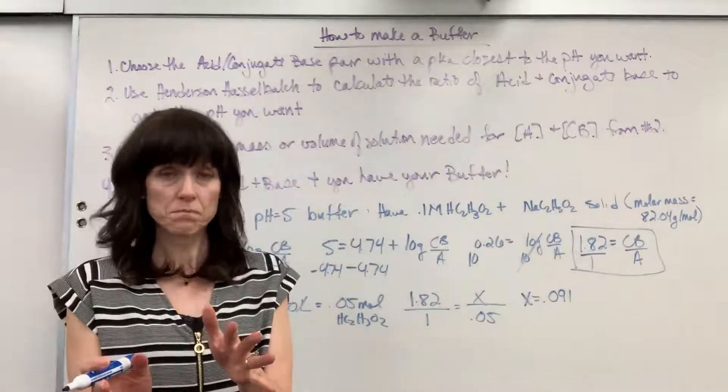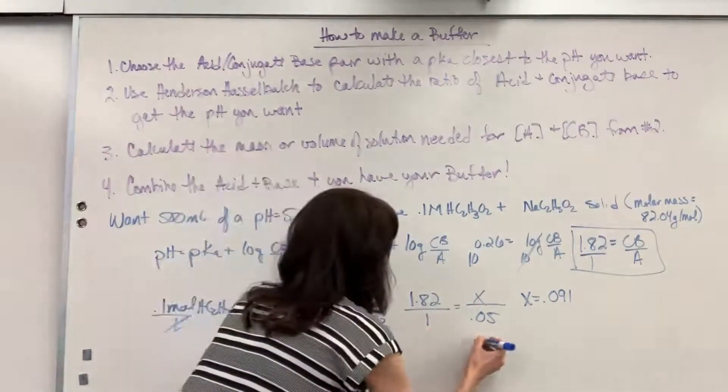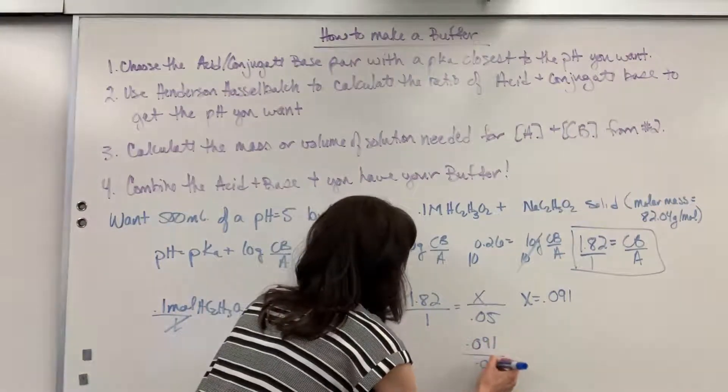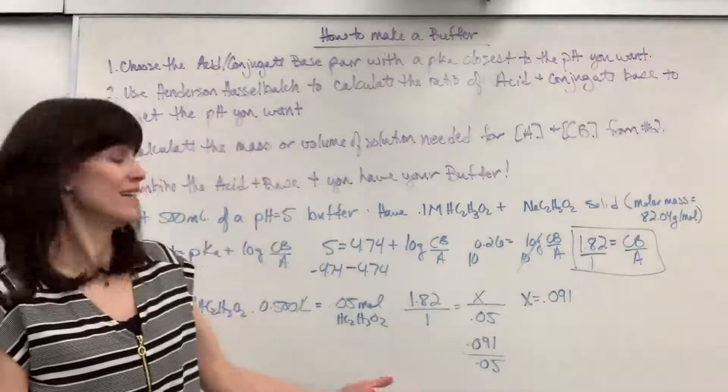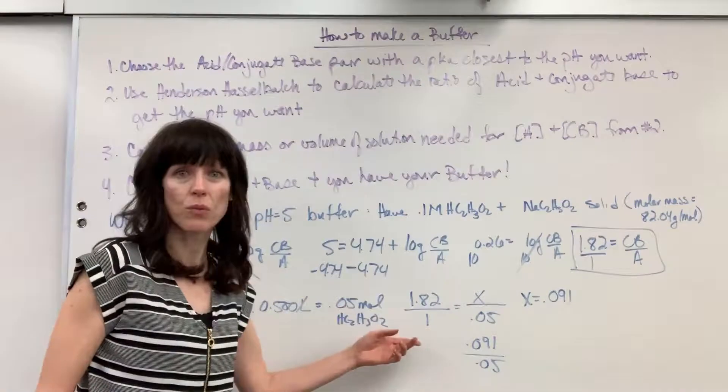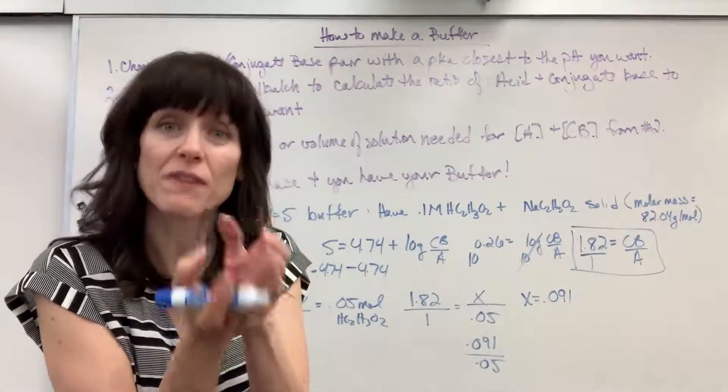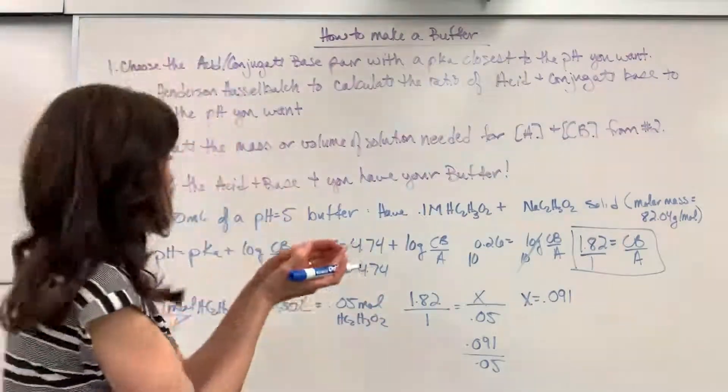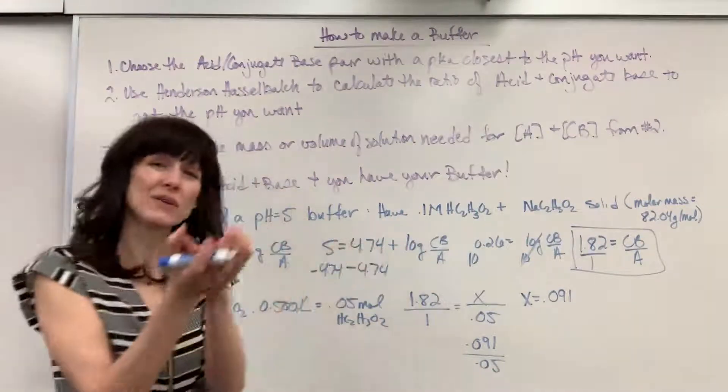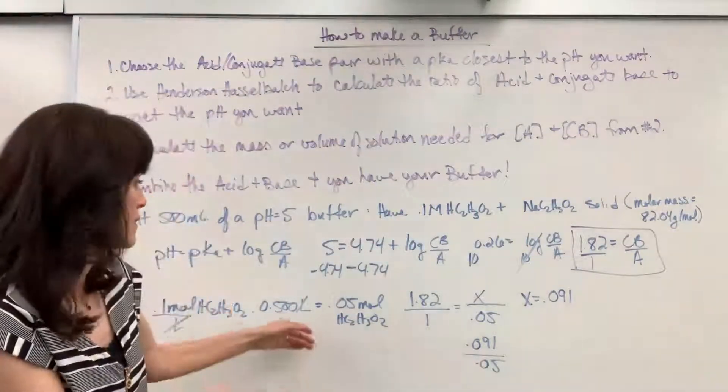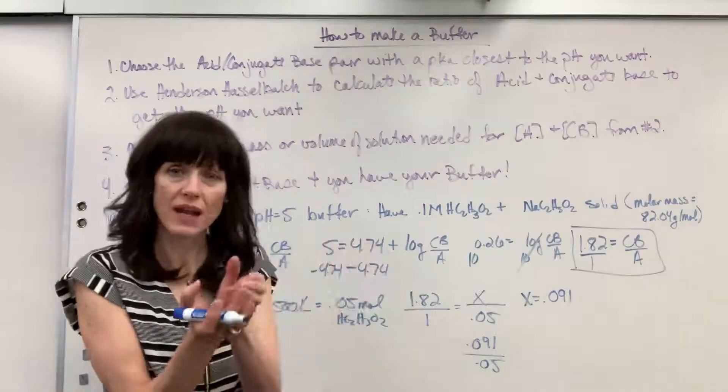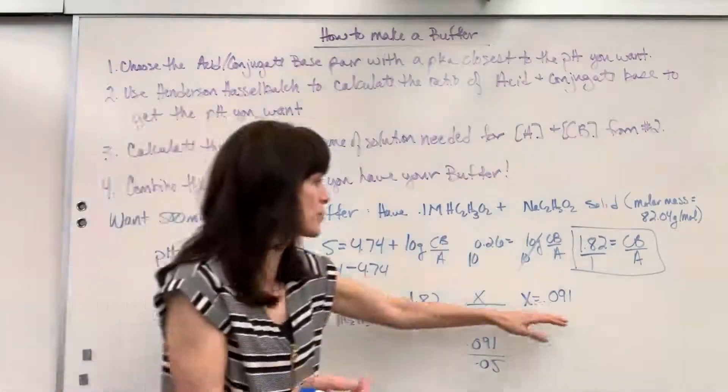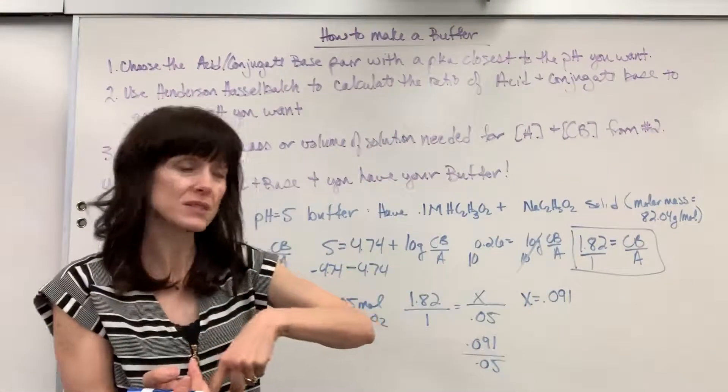Now, notice, if I took 0.091 divided by 0.05, guess what? It's 1.82 over 1. So if I have this beaker with 500 mils of 0.1 molar acetic acid,